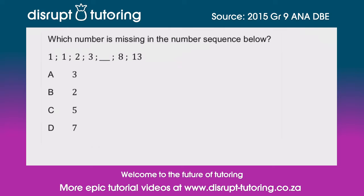So they've said to us which number is missing in the number sequence below. We've got 1, 1, 2, 3 and then we need to figure out what that number is, then 8, and then 13.